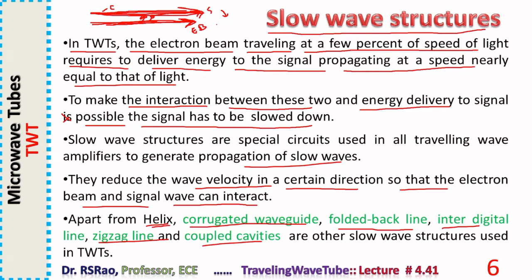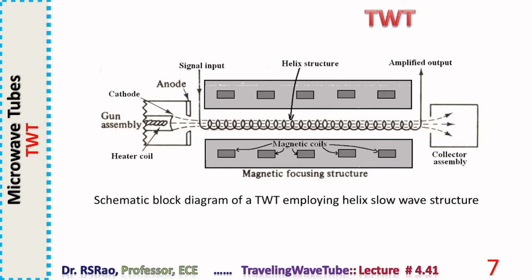As a result of the interaction, if things are arranged appropriately, energy transfer happens from the electron beam to the signal. To reduce the signal velocity to small values, slow wave structures are used — helix, corrugated waveguide, folded backline, etc. — and are widely used in the design of TWTs.